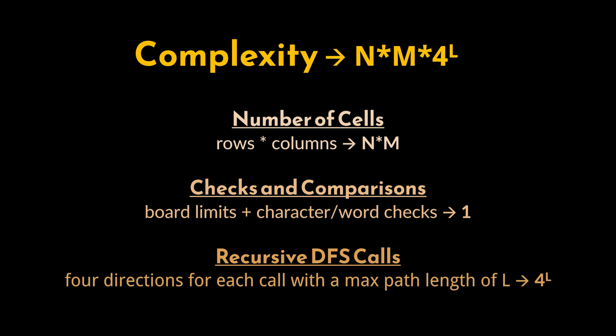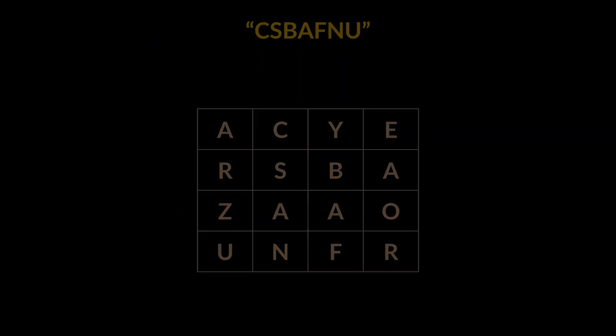So considering everything we just mentioned, the time complexity can be expressed as O of N times M times 4 to the power L, where N is the number of rows, M is the number of columns, and L is the length of the target word.